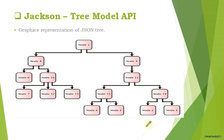Here is the graphical representation of the Tree Model data representation. We have Node 1, then Node 8, Node 9, and under Node 8 we have Node 6 and Node 10, and so on. We will talk about these in the next chapter.